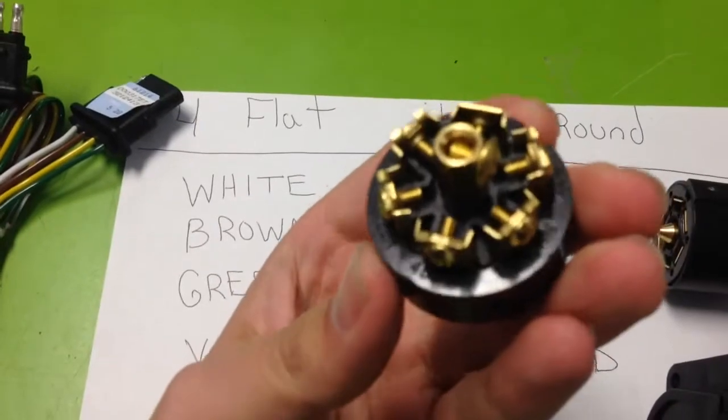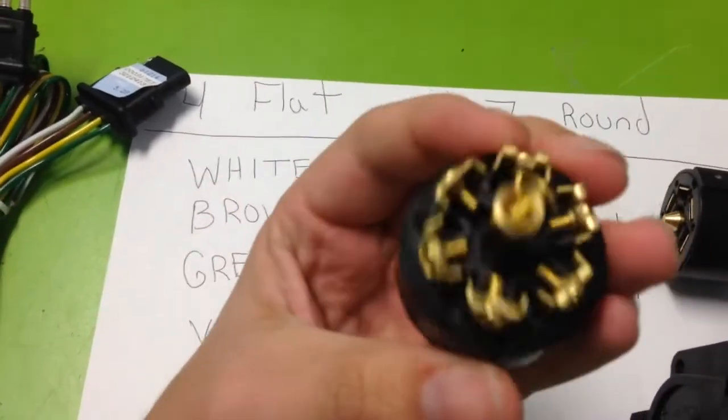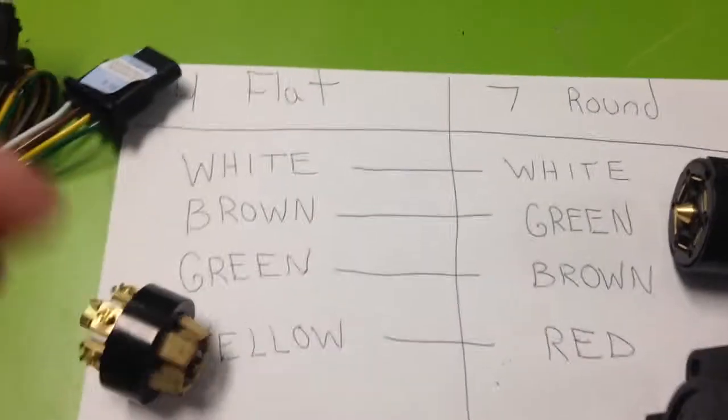On the seven round, they'll have a piece inside that looks like this. Each prong is labeled and there's the conversion.